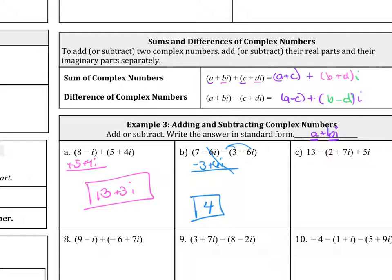For letter C, we notice we need to distribute as well. So we're going to distribute the negative 2. So that becomes negative 2 minus 7i. And then we still have this 13 and the 5i here. Let's combine like terms. Let's combine the 13 and the negative 2. 13 minus 2 is 11.